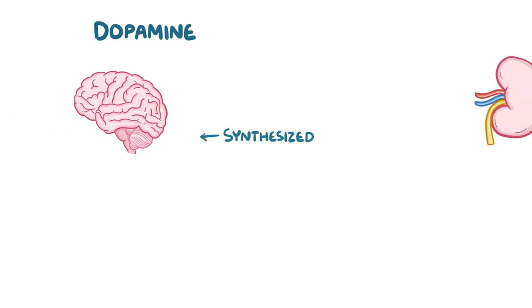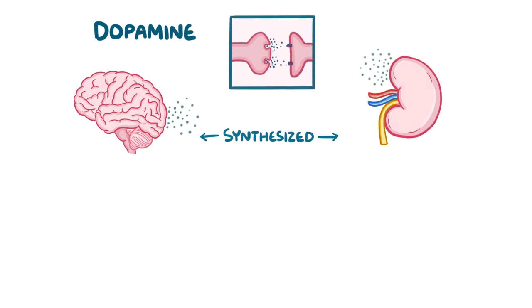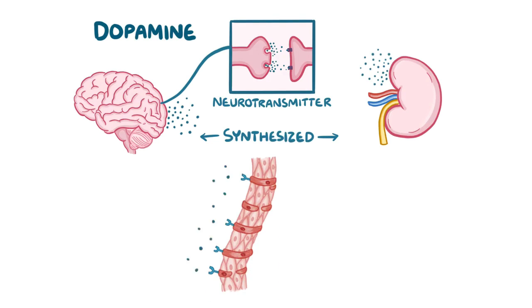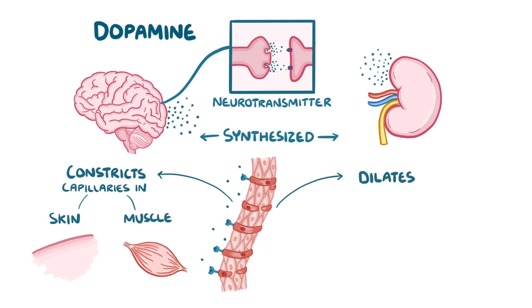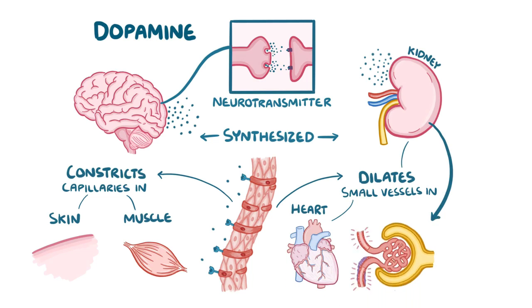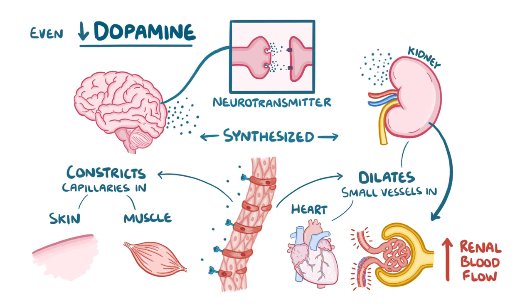Finally, there's dopamine, synthesized by cells in the brain and the kidneys. In the brain, dopamine functions as a neurotransmitter. In the brain and the rest of the body, it binds to specific dopaminergic receptors on smooth muscle cells, constricting capillaries in skin and muscles while dilating small vessels around vital organs such as the heart and kidneys. With vasodilation of both afferent and efferent arterioles, low concentrations of dopamine increase renal blood flow.